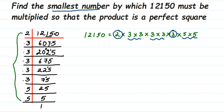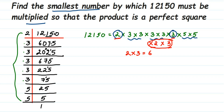The smallest number to be multiplied is 2 and 3. If we have another 2 and another 3, then these will pair up and the number will become a perfect square. So we multiply 2 × 3 = 6. Six is the smallest number to be multiplied.